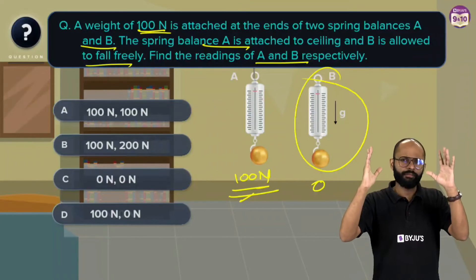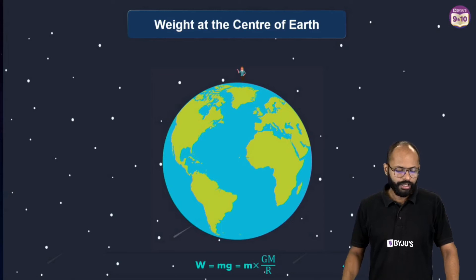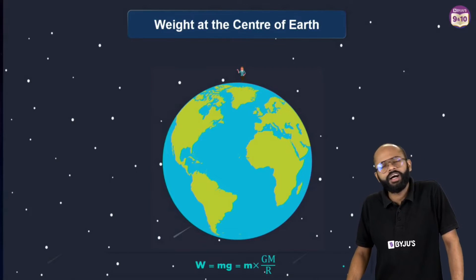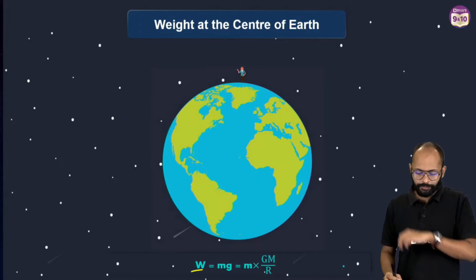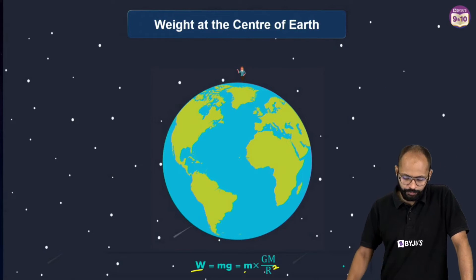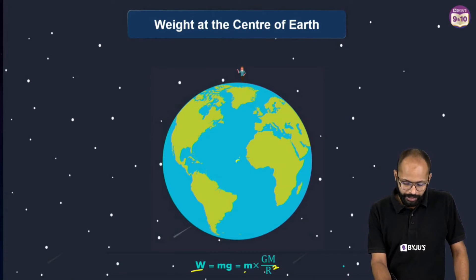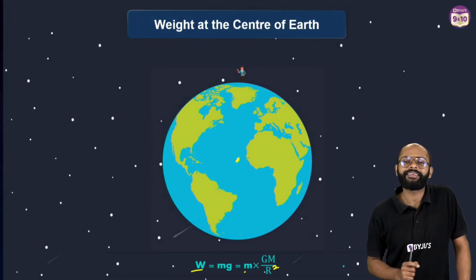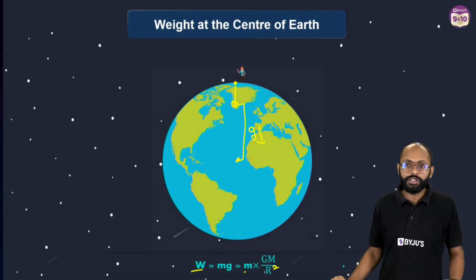When a body falls freely — with acceleration due to gravity — its weight becomes zero. So the answers are 100 N and 0 N. Now, what is the weight at the center of the earth? Many people think it should be zero, but let's verify why. W = mg = m × (GM/r²). If the radius at the equator is more, g is less. If the radius at the pole is less, g is more. So if you take the body inside the earth, shouldn't g become even less — making weight less?